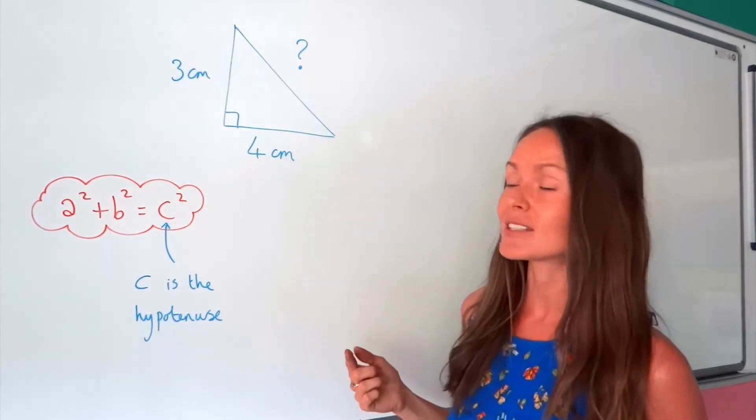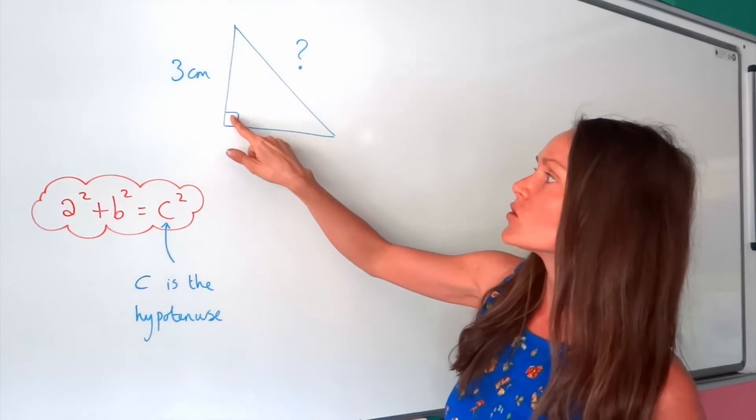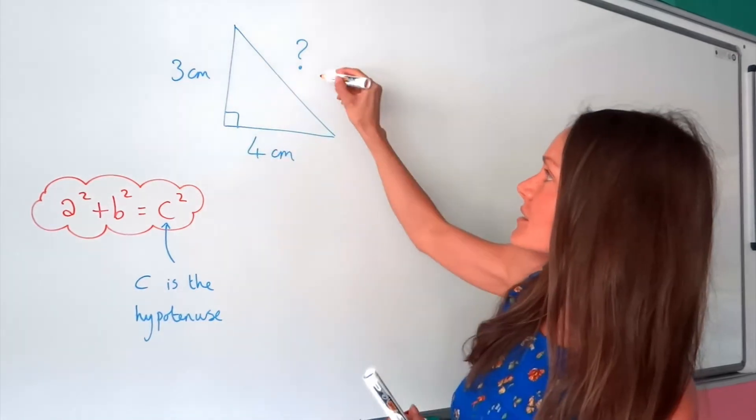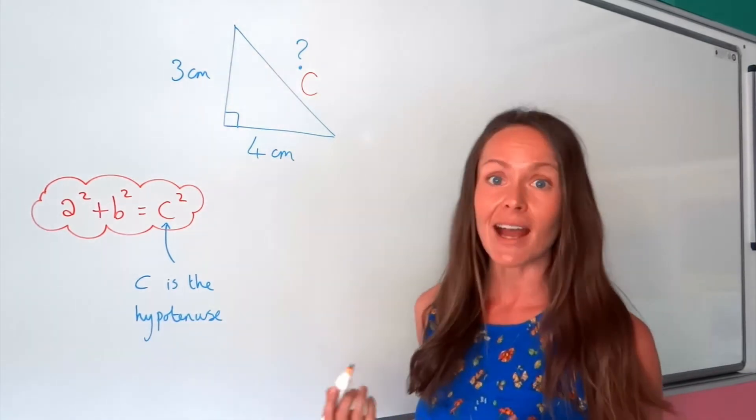So the right angle is the angle that's 90 degrees, so this one here. So opposite the right angle would be this side. So you need to start by labelling that side as c.